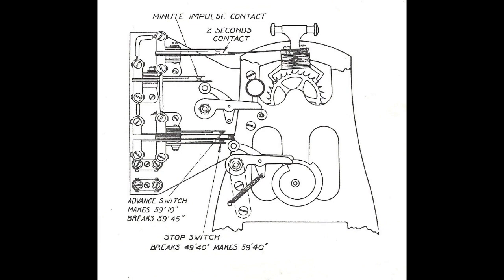This master switch diagram shows the precise timing of the three switches. From the bottom, the B line stops at 49.40 and makes at 59.40. That means no B line impulses for 10 minutes. Fast slaves wait when they get to 59.